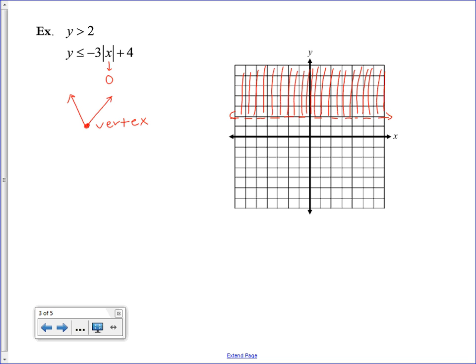This number here affects the y value of our vertex by moving it up 4. So (0,4) are the coordinates of our vertex. I'm going to graph this V on the graph, so I'm going to find a point (0,4). That's the vertex of the V.